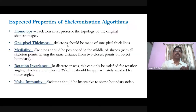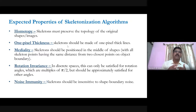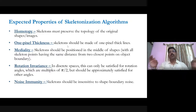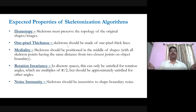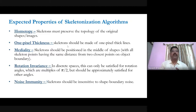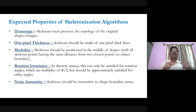Now, what are the expected properties of a skeletonization algorithm? The first expected property is homotopy — the skeleton must preserve the topology of the original shape and image. If after obtaining the skeleton the topology has changed, then the algorithm is not useful. So the first and most important requirement is that any proposed method for obtaining the skeleton should preserve the topology of the original shape.